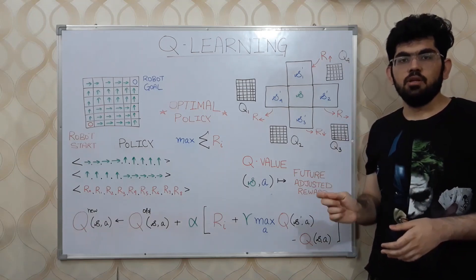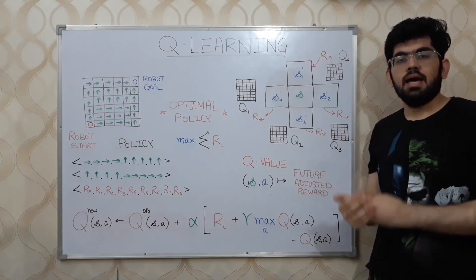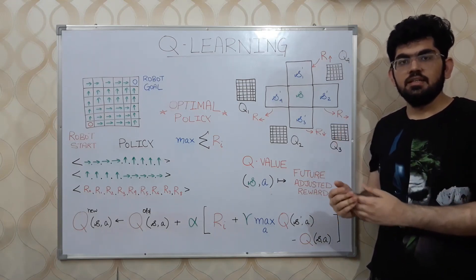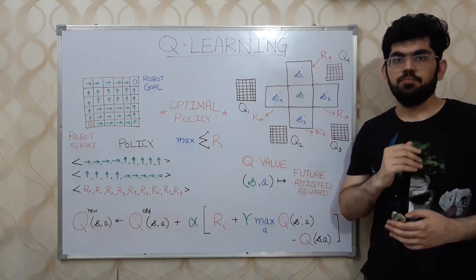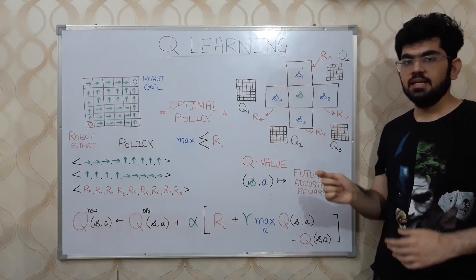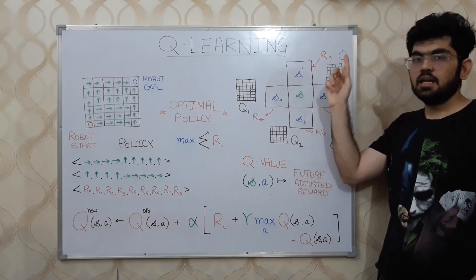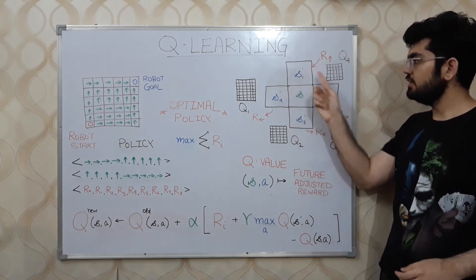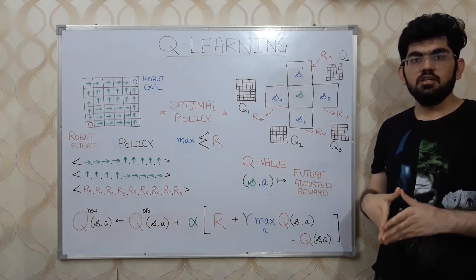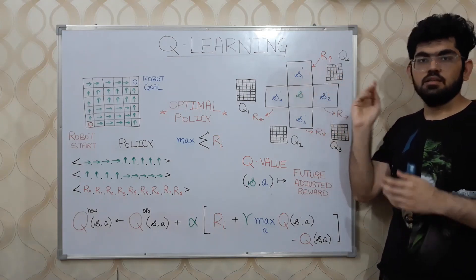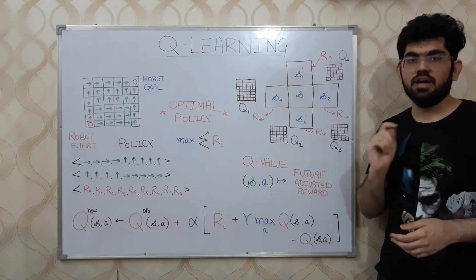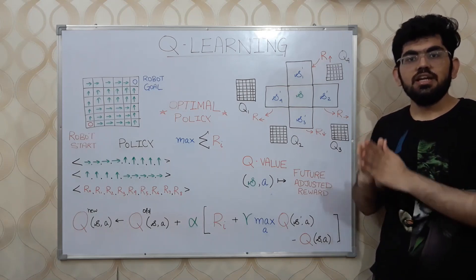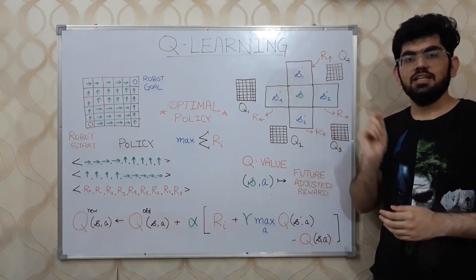For the path planning problem, the Q value implies which action is more likely to lead the robot to its goal state in the future. Based on the action the robot can take in a particular state S — either up, right, down, or left — the robot compares the different Q values for each action. The robot then takes the action with the highest Q value. But inferring decisions from Q values is easy; we also need a way to calculate these Q values in the first place.